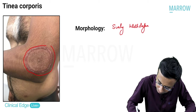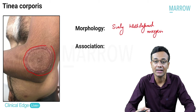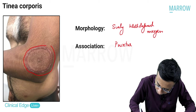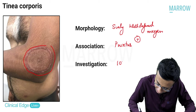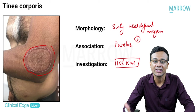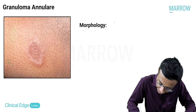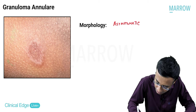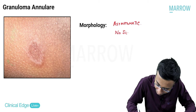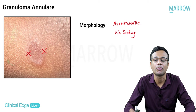Tinea or dermatophytosis is an itchy condition, so pruritus will be present. To confirm the diagnosis, do a 10% potassium hydroxide mount to visualize the branching filaments of dermatophytes. Whereas granuloma annulare also presents with an annular plaque and central clearing, but it is an asymptomatic condition - no itching. There is also no scaling. These are the two important 'no's for granuloma annulare, which help distinguish it from tinea corporis.